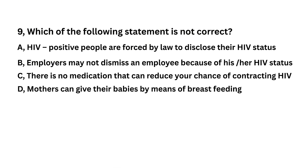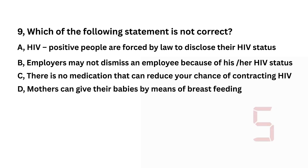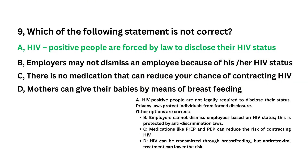Which of the following statements is not correct? HIV-positive people are forced by law to disclose their HIV status; employers may not dismiss an employee because of their HIV status; there is no medication that can reduce your chance of contracting HIV; mothers can transmit HIV to their babies by means of breastfeeding. HIV-positive people are forced by law to disclose their HIV status is the answer.